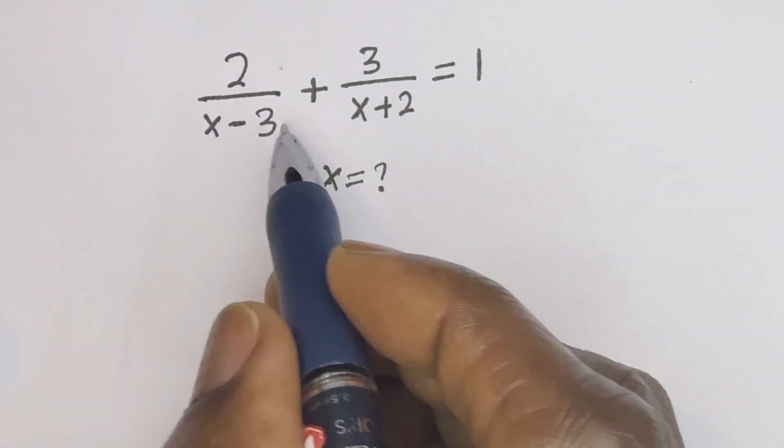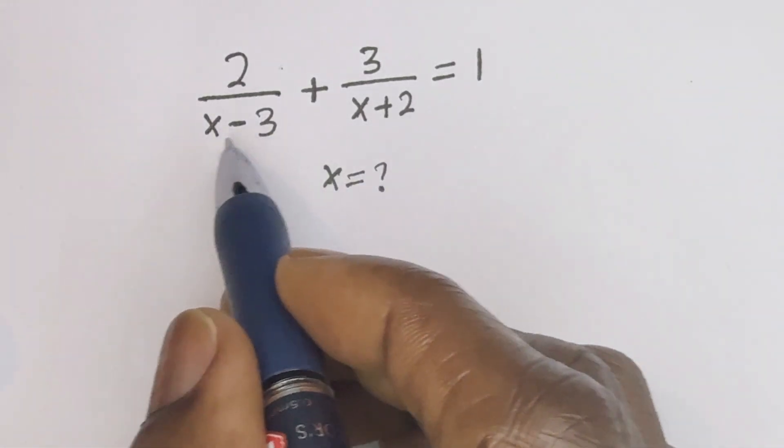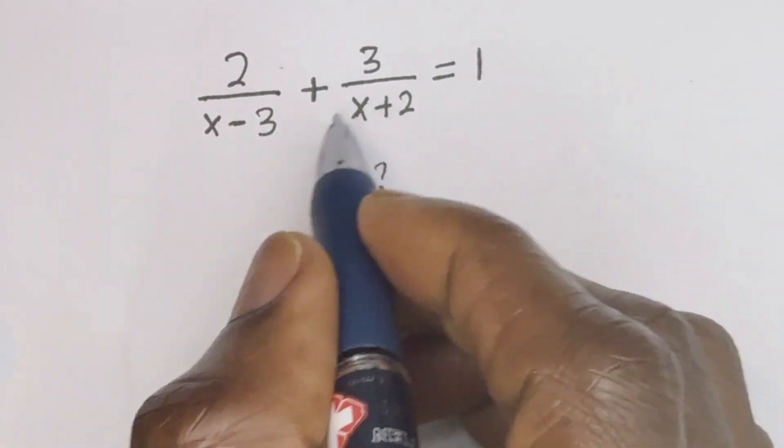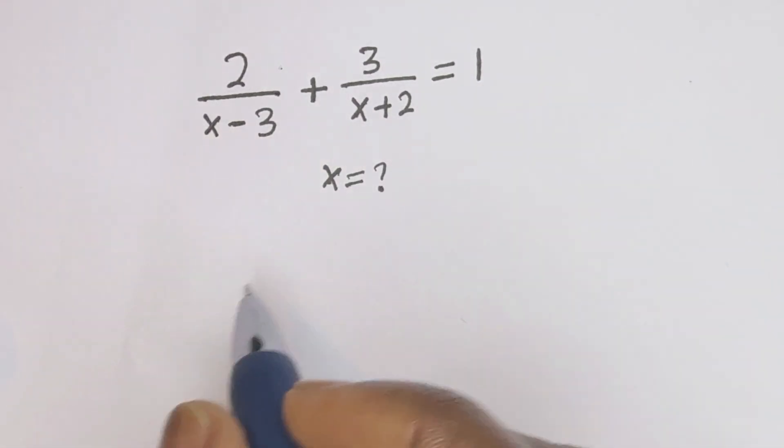Then here, we look for the LCM. The LCM is x minus 3 bracket x plus 2.